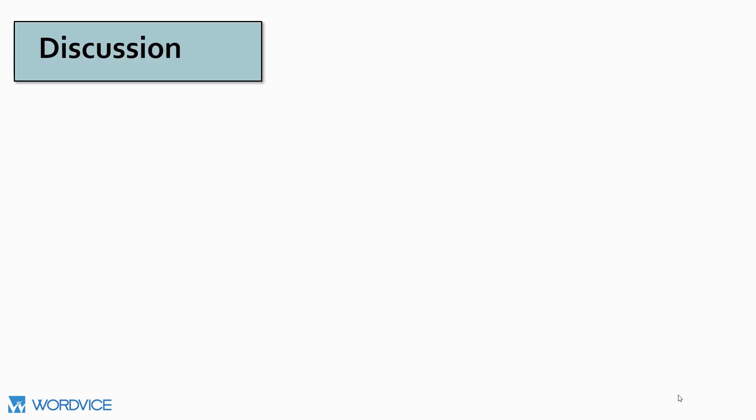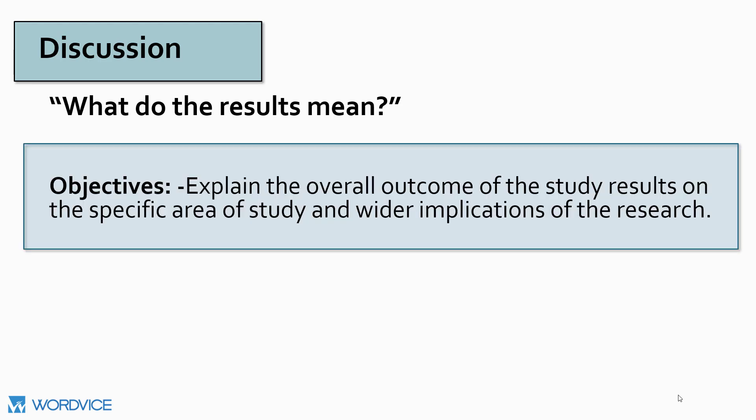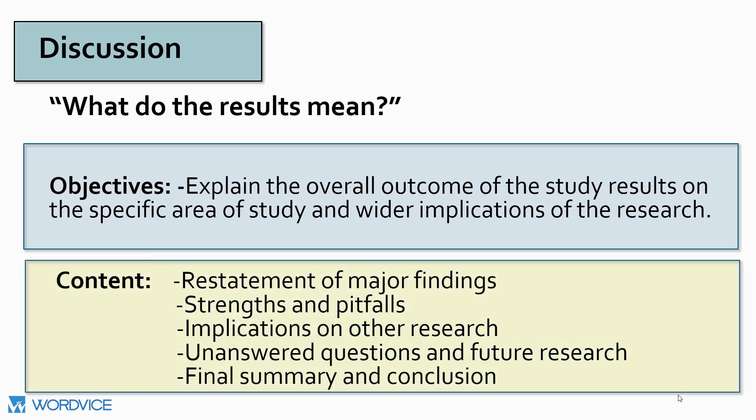The discussion section is the largest part of your research paper, and in it you will answer the broad question: what do the results mean? Your main objective is to explain the overall outcome of the study results on the specific area of study and tell about the wider implications of the research. This means you will be talking about not only the research for your specific area of study, but if applicable, to other research that might be conducted in the future. The content will include a restatement of major findings, strengths and pitfalls of your study, implications on other future research, any unanswered questions in future research, and a final summary and conclusion.